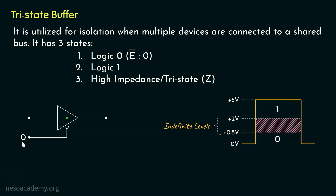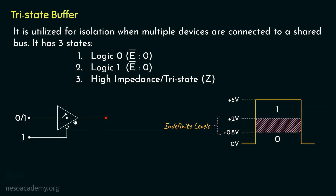Additionally, when the enable input is active, if we send logic one — a voltage within the logic one range — the buffer, since the switch in between is connected, will propagate that voltage to the output end as well, and this is known as logic one, for which the enable input also has to be active. Now if the enable input is one, which is essentially inactive, the switch is already disconnected. In that case, whether we send zero or one, at the output end we will receive nothing. This is because we are providing high impedance — the greatest form of resistance — and this is known as the high impedance or tri-state.